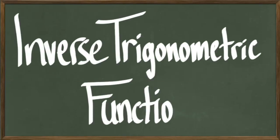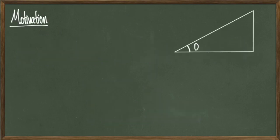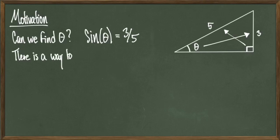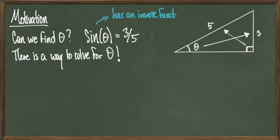Hey everyone, today we're going to be talking about inverse trigonometric functions. To start off with some motivation, say that I have the triangle with angle theta, a side 3, and a hypotenuse 5. I know that sine of theta is equal to 3 over 5, but is there a way that I can figure out what theta is just based off the given information?